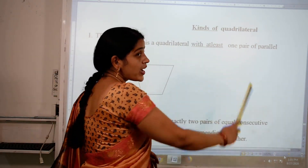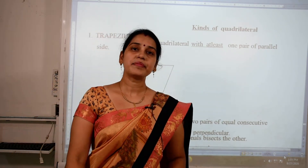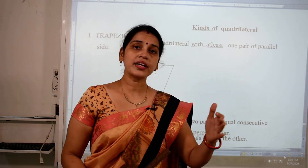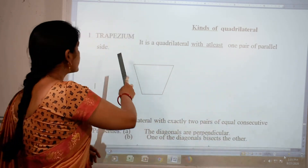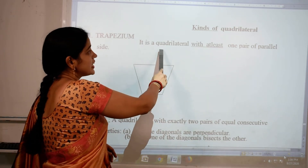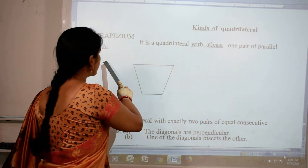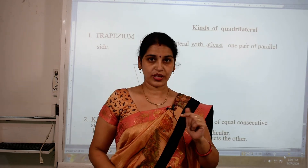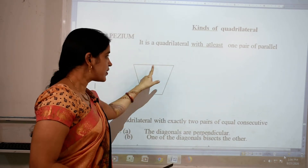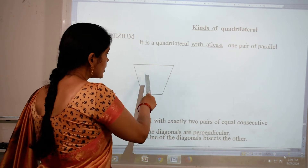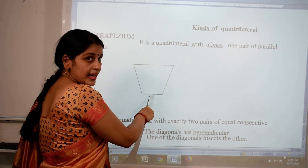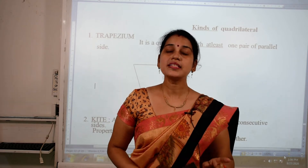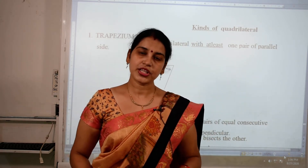In the previous video I explained what quadrilaterals are — a simple closed figure made up of 4 line segments. Now we see different types. The first type is trapezium. Its property is that it is a quadrilateral with at least one pair of parallel sides. In trapezium, one pair is always parallel. Here in this figure, this pair and this pair is parallel, and these two are not parallel.